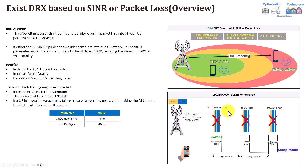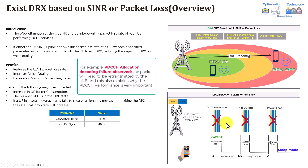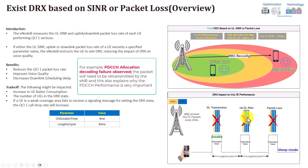The eNodeB performs the downlink transmission using PDCCH and allocated PDSCH resources. If this particular packet fails to decode, the eNodeB needs to retransmit after 8 ms — but this cannot happen immediately because the user enters the long DRX cycle of 40 ms, where the user is awake for only 4 ms and sleeping for the remaining 36 ms. The retransmission must wait until the user returns to the ON Duration timer at the start of the next long DRX cycle.